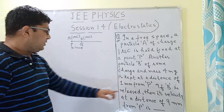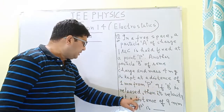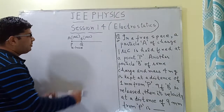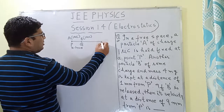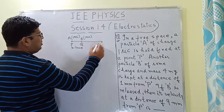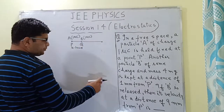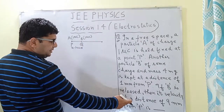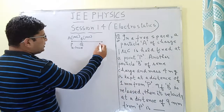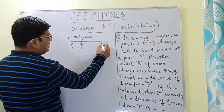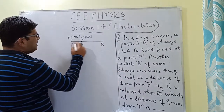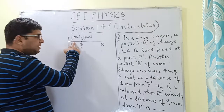Now, particle B is charged 1 microcoulomb. If particle B is released, its velocity at a distance of 9 mm from P is what we have to find. Let us consider a point R which is at a distance of 9 mm from point P.